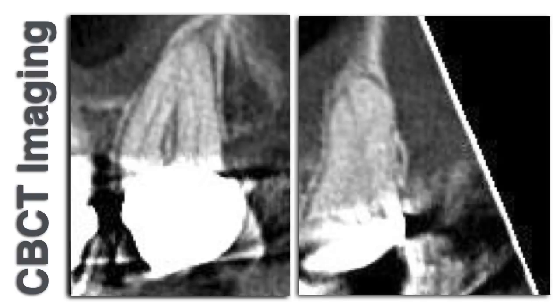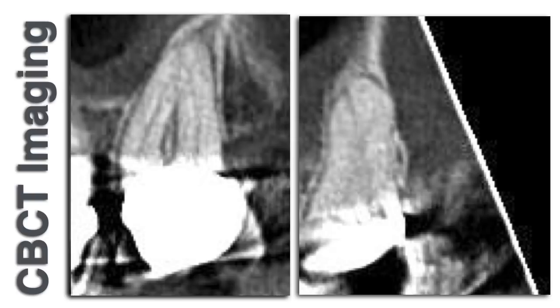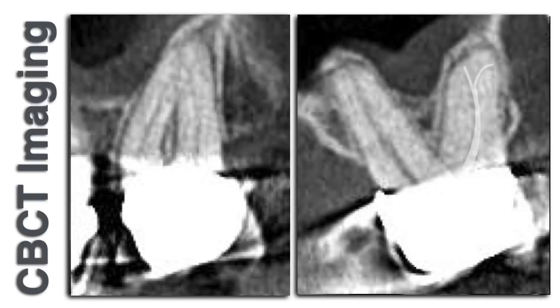Looking at the CT projection of the buccal roots in their non-foreshortened position allows us to look at the mesial buccal root. We see an MB1 and MB2 here — an exact reflection of what we saw in the conventional image, so that's reassuring. Looking at the distal buccal root, it looks like it has an apical bifurcation, and we'll find out postoperatively if that was the case. In this live demo, all the anatomy seen preoperatively was addressed and displayed in the post-op fill.